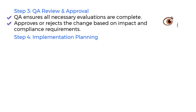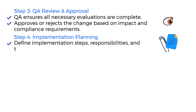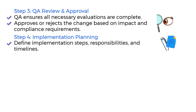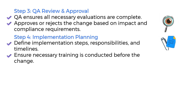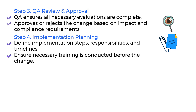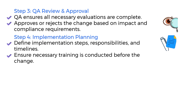Step 4: Implementation Planning. Now that the change is approved, we need a controlled plan to carry it out. This includes defining detailed steps for execution, assigning responsibilities, setting timelines, and identifying any training needs. For example, if a new software version is to be implemented, operators may need training before they begin using it. Proper planning ensures the change is done safely, consistently, and in compliance.